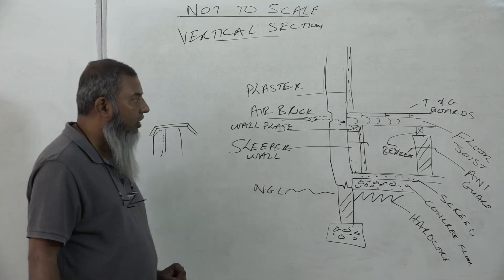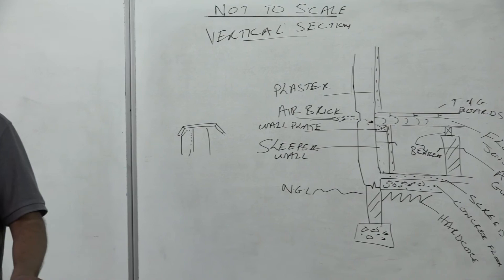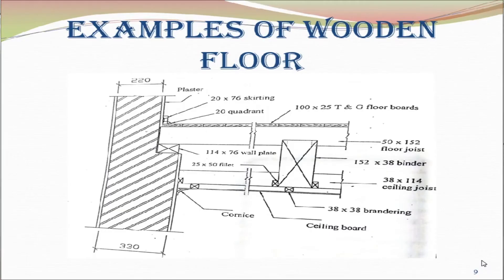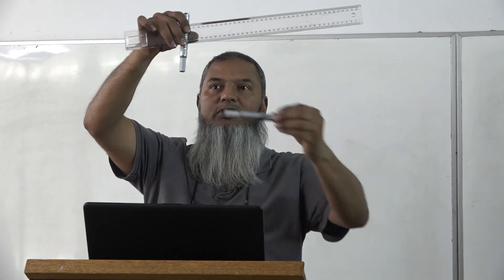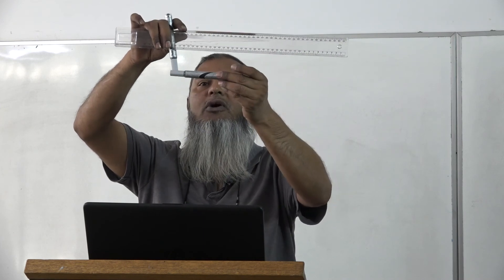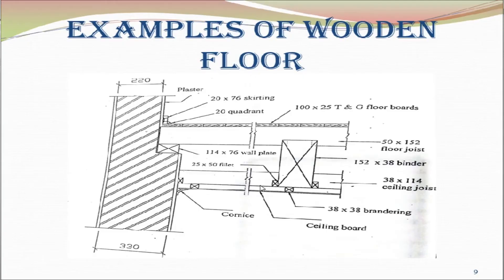So guys, that is your vertical section of your suspended wooden floor and a brief outline of how it works and what happens. Now that we've looked at the suspended wooden floor and how it actually works, we're going to look at some examples of wooden floors. On the screen in front of you, you can see that we have a wooden floor. We can see part of the wall. This wall plate has been fixed onto the wall. We can see the wall was 330, reduced to 220 internally. Wall plate, floor joist, floor boards coming in, and the rest of completing the building. On the other side, we can see that we have what is called a binder. The binder is connected or attached to the floor joist.